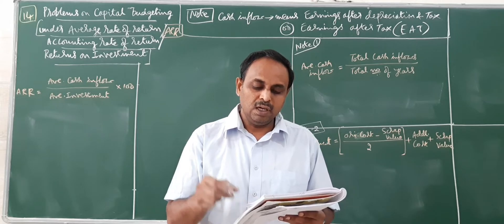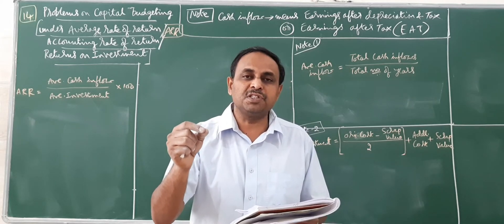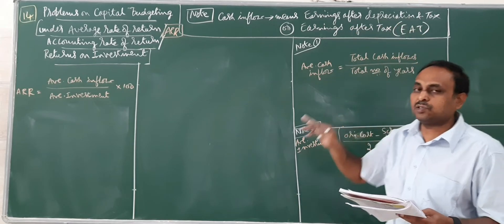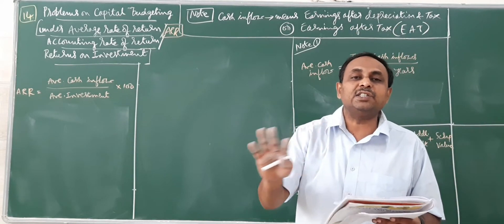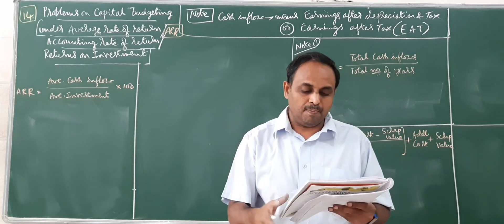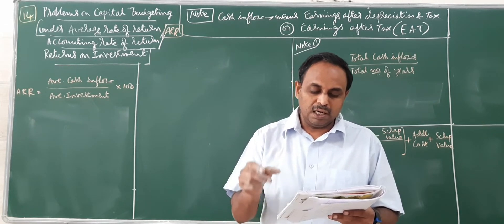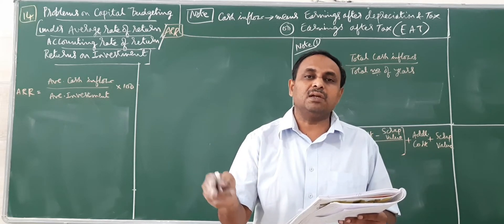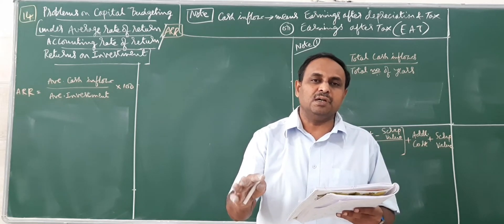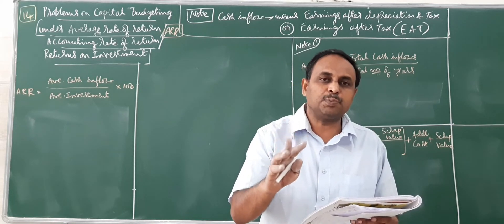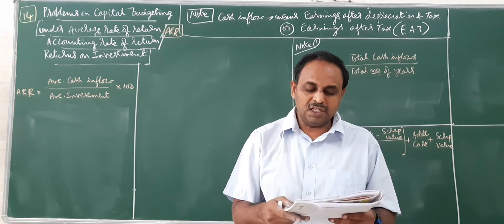Then you have income after depreciation and tax. Remember, income after depreciation and tax, no need to change the cash inflow. Both are same. So here you have five years information and depreciation charge straight-line method. No need of calculating depreciation here because already it has been done and the cash inflows are proper as per ARR method.